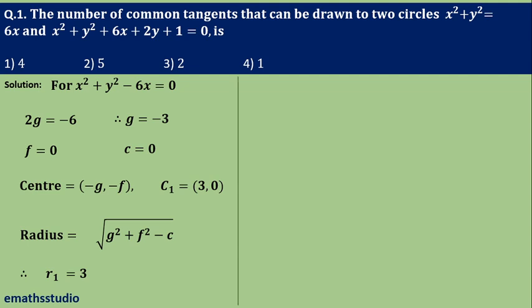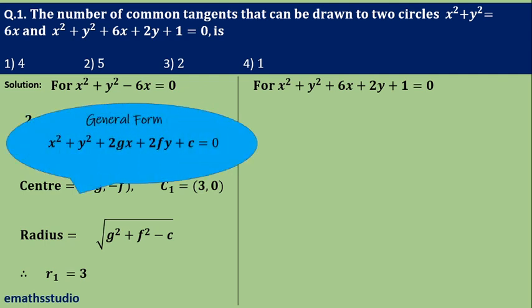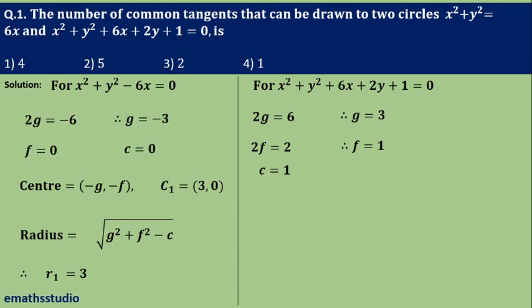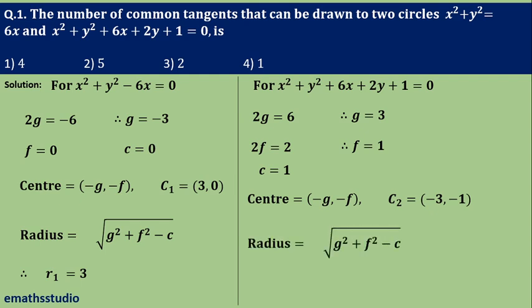For the second circle, comparing with the general form gives 2g = 6, so g = 3; 2f = 2, so f = 1; and c = 1. The center is (−3, −1). The radius is √(g² + f² − c) = √(9 + 1 − 1) = √9 = 3 units.